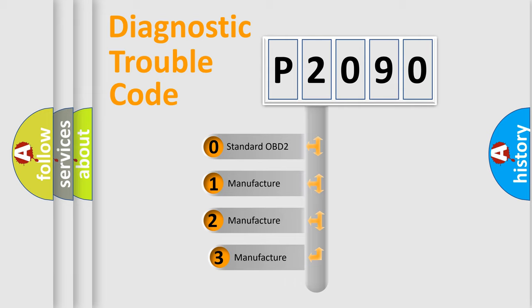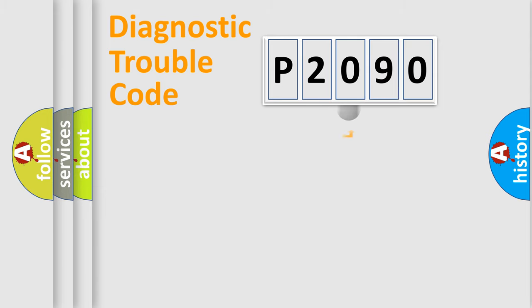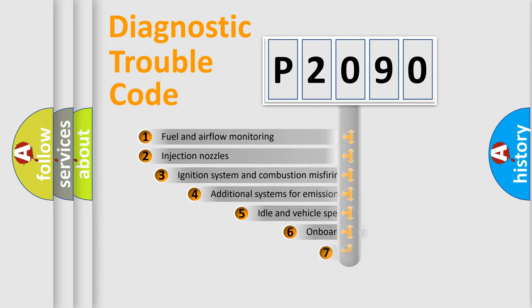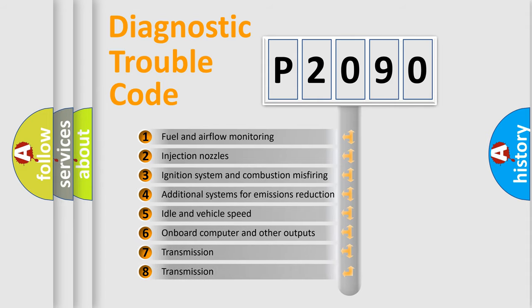If the second character is expressed as zero, it is a standardized error. In the case of numbers 1, 2, 3, it is a manufacturer-specific error. The third character specifies a subset of errors.